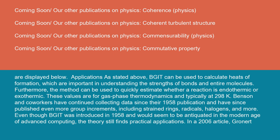Applications: As stated above, BGIT can be used to calculate heats of formation, which are important in understanding the strengths of bonds and entire molecules. Furthermore, the method can be used to quickly estimate whether a reaction is endothermic or exothermic. These values are for gas-phase thermodynamics and typically at 298K. Benson and co-workers have continued collecting data since their 1958 publication and have since published even more group increments, including strained rings, radicals, and halogens. Even though BGIT was introduced in 1958 and would seem to be antiquated in the modern age of advanced computing, the theory still finds practical applications.